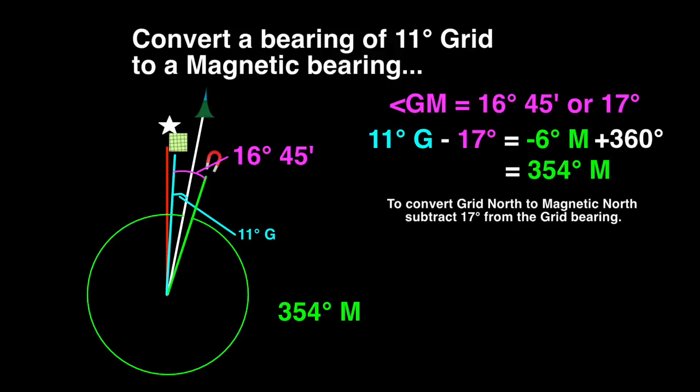To convert grid north to magnetic north, subtract 17 degrees from the grid bearing. To convert magnetic north to grid north, add 17 degrees to the magnetic bearing.